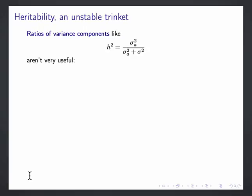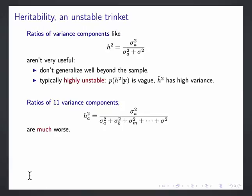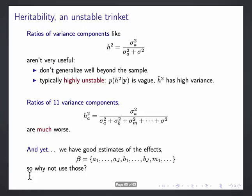And so ratios of variance components aren't terribly useful. They don't generalize well beyond the sample. They're typically highly unstable, very vague. Ratios of 11 variance components gets absolutely terrible. But then there's a kind of a paradox here because we're using these variance components to get really kind of precise, stable estimates of the underlying effects. So why not come up with a version of heritability that's based on the effects?